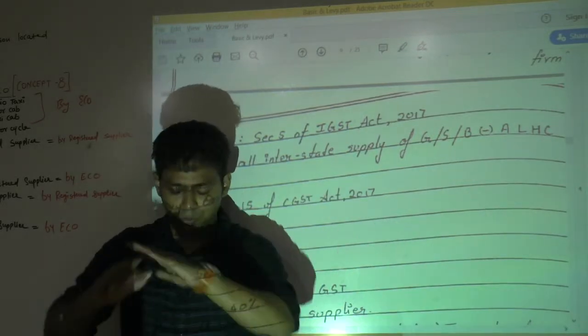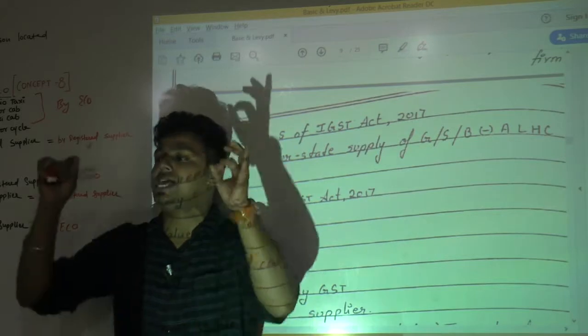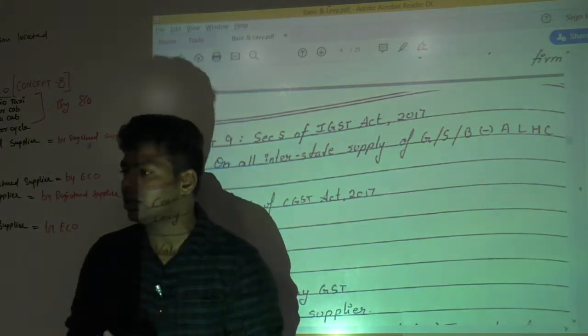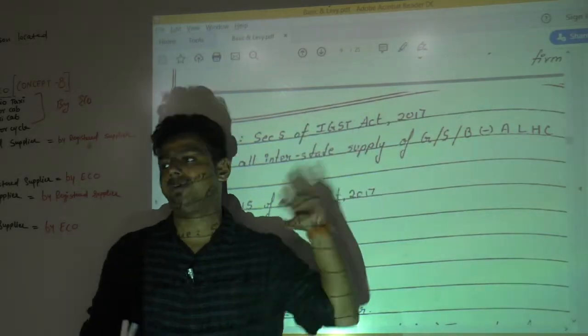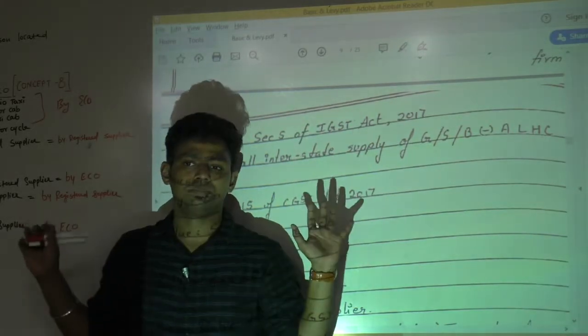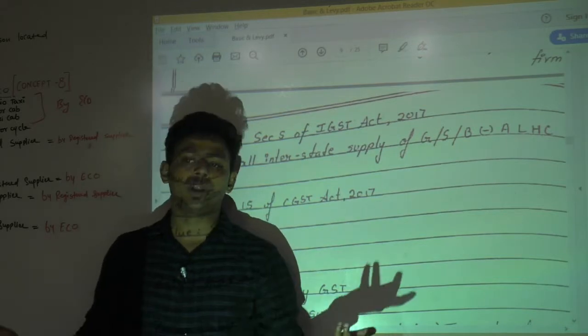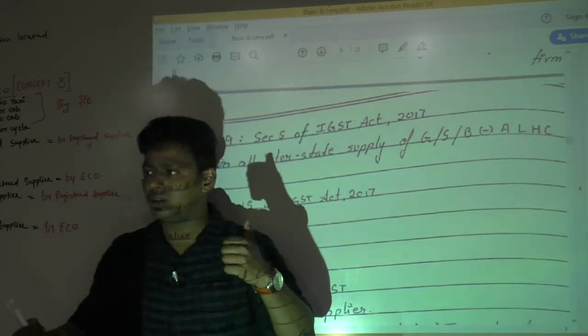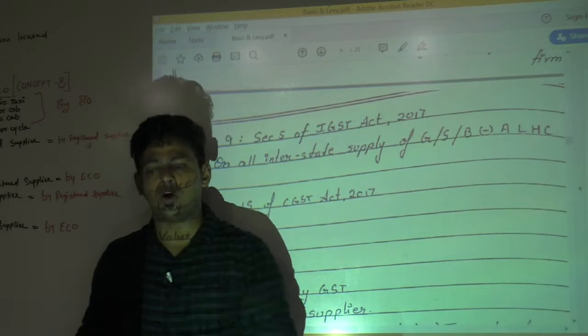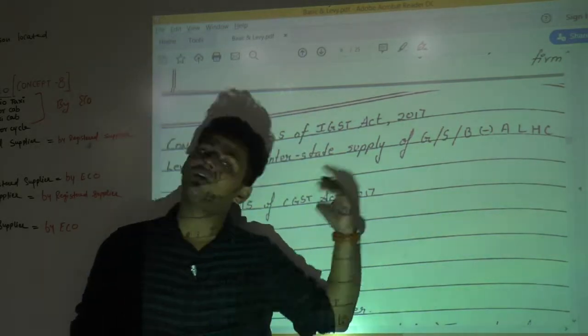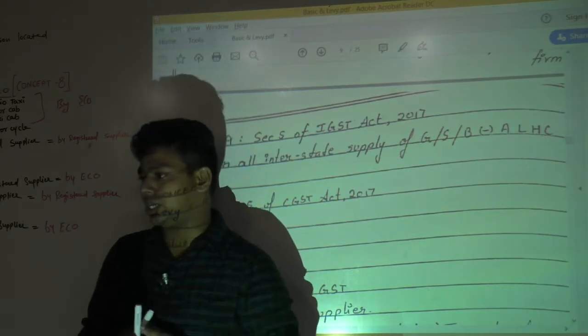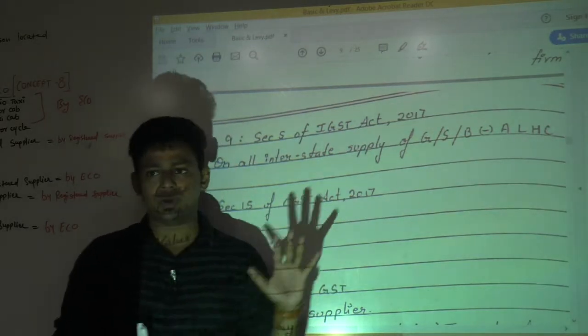Whole charging section. Balance part of whole charging section is exactly same to 9-1, 9-2, 9-3, 9-4, 9-5. Exactly same. No changes. Am I clear? Therefore we don't have to write. So when we were reading 9, we had completed 9 of CGST Act, section 9 of HGST Act, and section 5 of IGST Act. Okay? Only these changes were there.